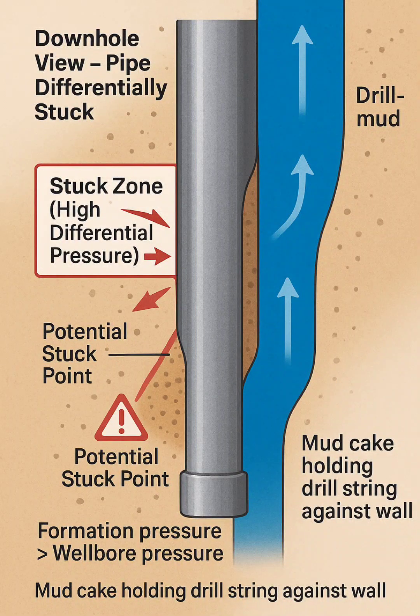Mud cake layer: The thin brown layer between the pipe and formation shows mud cake, which can act like glue, further trapping the pipe against the wall.